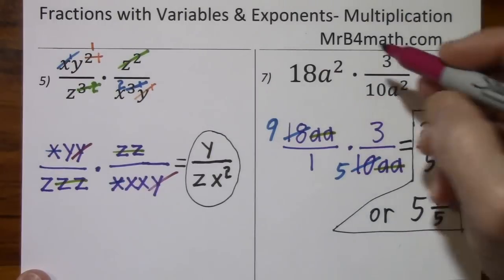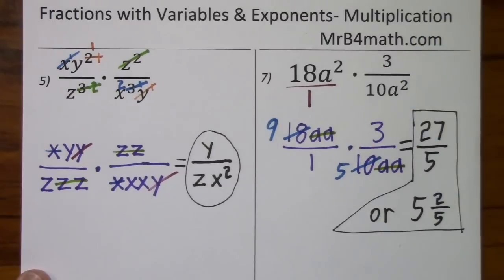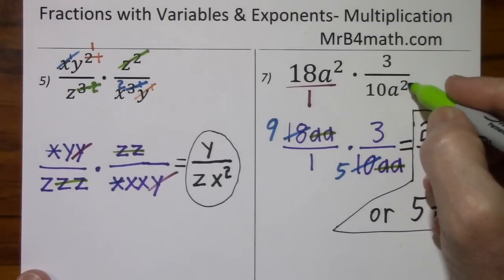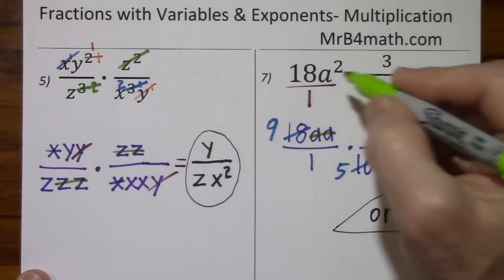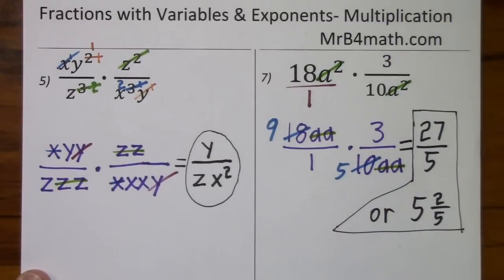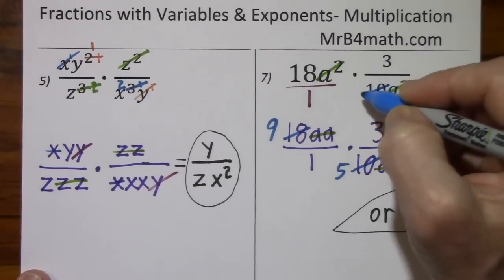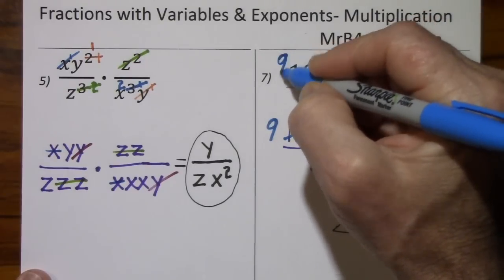If you want to try to do this in a slightly faster way, we'll just put that over a one. And notice you have two a's in the denominator, two a's in the numerator. So the a's cancel the a's. And then again, two is a common factor. Two goes into 10, five times. Two goes into 18, nine times.